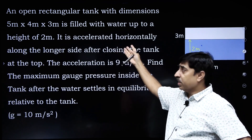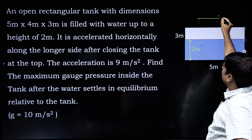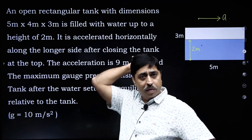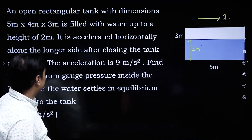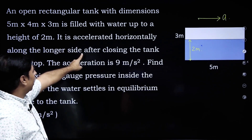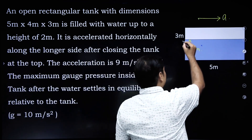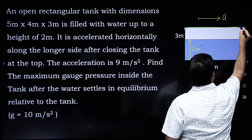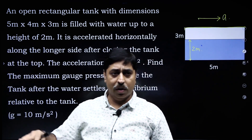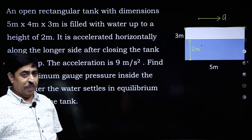Now, the whole tank is accelerated horizontally along the longer side — this is how the tank has been accelerated — with a very high acceleration of 9 meter per second square. But the question says it is accelerated horizontally along the longer side after closing the tank at the top. So first you close the tank, put a lid here, and then you accelerate the tank with acceleration 9 meter per second square.